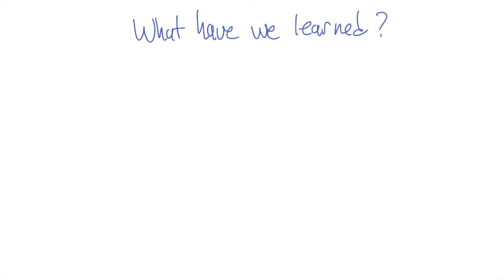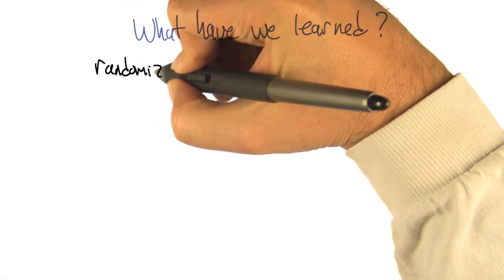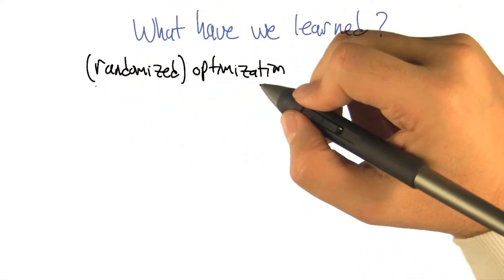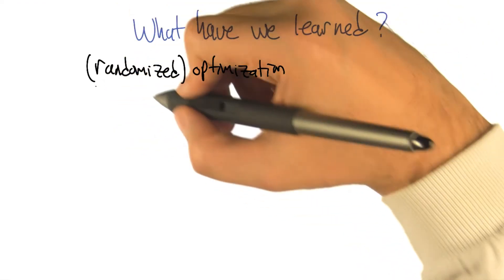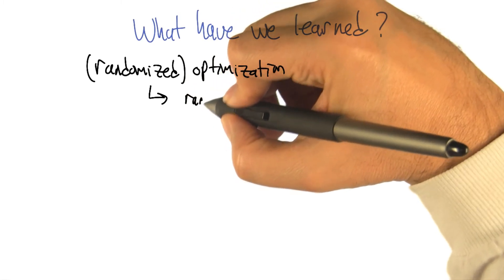So what have we learned? We learned about randomized optimization, period. That there is a notion of optimization in the first place. So we talked about optimization in general, and then what was the randomized part? Well, we take random steps, or we start off in random places.